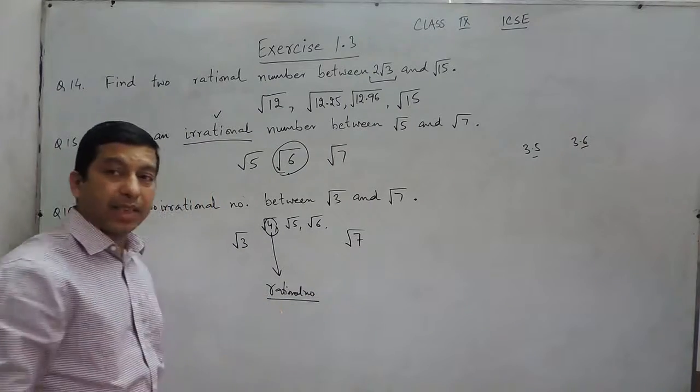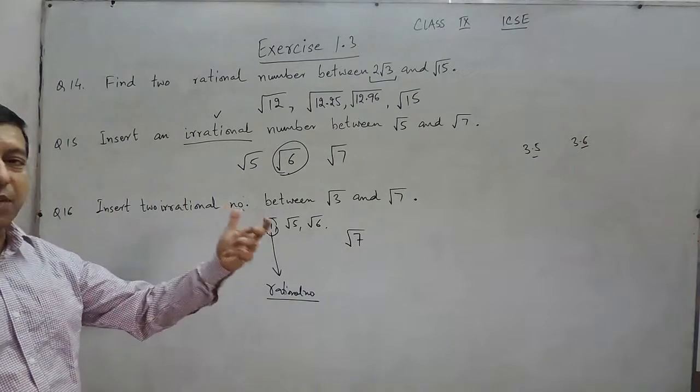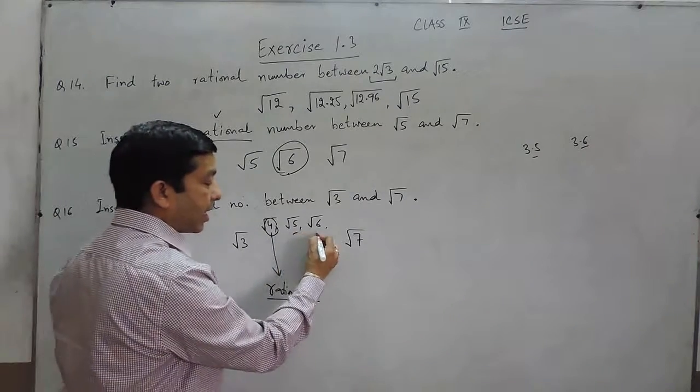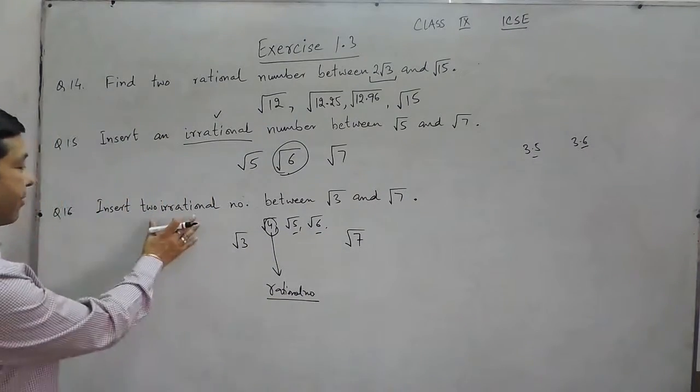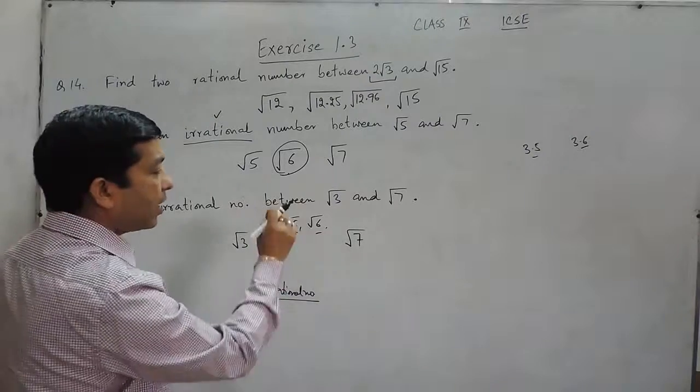As we have already discussed, in the under roots, whenever there is a perfect square, that is rational. And definitely this and this number are irrational. Here we have to write two irrational numbers, which are these two.